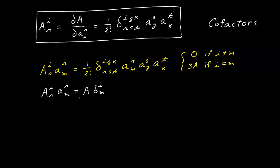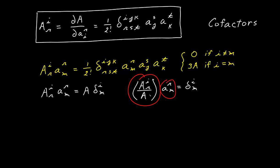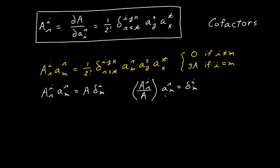If we now divide both sides of this expression by the determinant value A, we'll find that the cofactor A^I_R divided by the determinant value A, contracting with the system element A^R_M, equals the Kronecker delta delta^I_M. In other words, these two factors are multiplicative inverses of each other. This factor right here is the matrix inverse of our original system. It's an important result because it gives us an easy way to invert a matrix: if we start with our system, use this expression to derive the cofactors, and then divide by the determinant value, we'll have the inverse of the matrix. So the cofactors are proportional to the inverse of the matrix, and the constant of proportionality is the determinant value.